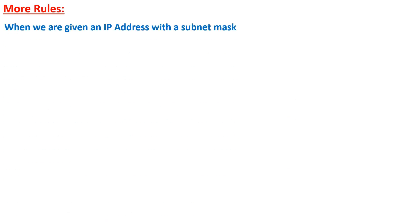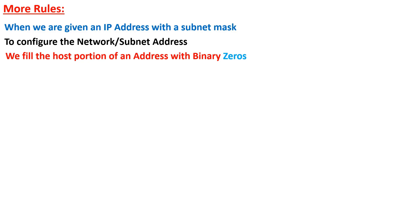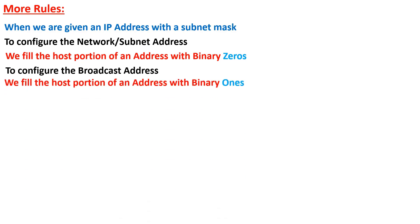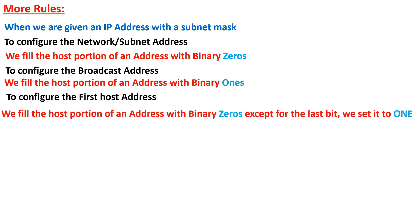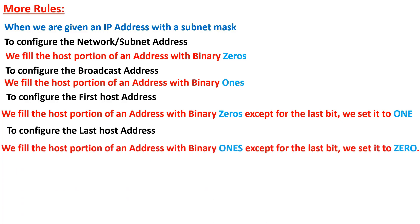We still have more rules. When given an IP address with a subnet mask and asked to configure the network subnet address, we fill the host portion of an address with binary zeros. To configure the broadcast address, we fill the host portion of an address with binary ones. And if asked to configure the first host address, we fill the host portion of an address with binary zeros, except for the last bit, which we set to a one.